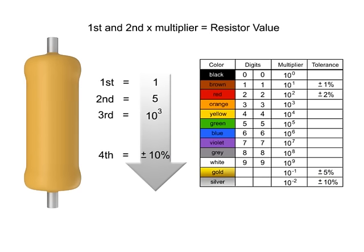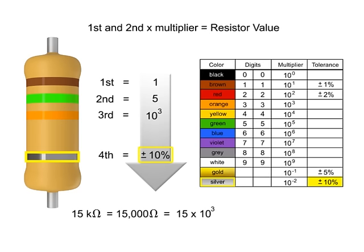Now, let's determine what the bands would be on a 15 kilo-ohm resistor. Since the first digit is 1, the first band would need to be brown. The second digit is 5, so the band color would need to be green. The resistor value is 15,000 ohms, so we need to add three zeros to 15. Three zeros is a thousand, so we need to have a multiplier of 10 to the third. Thus, the third band would need to be orange. The last band would need to be silver to indicate that the resistor has a tolerance of plus or minus 10%.